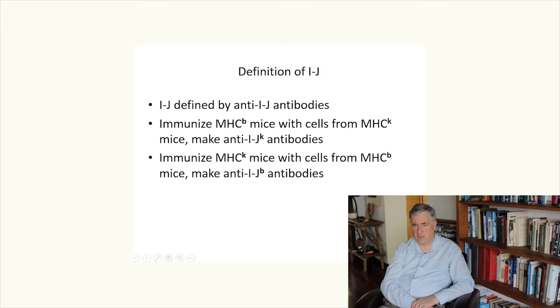We now come to the definition of IJ. IJ is defined by anti-IJ antibodies. We can produce anti-IJ antibodies by immunizing, for example, MHC allele B mice with cells from MHC allele K mice, and that will produce anti-IJ antibodies.